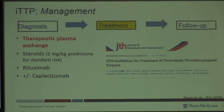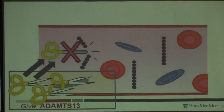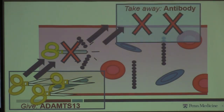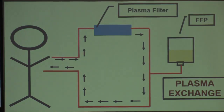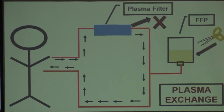Therapeutic Plasma Exchange isn't widely known outside of those affected by TTP. The goal is really to give patients back their scissors — the ability to cut that von Willebrand factor again — and to clear the antibody. For most cases it's an antibody-mediated process. What we do is take the patient's plasma, put it through a filter, and give them fresh frozen plasma back. This removes the antibody and gives them back their ADAMTS13. Unfortunately this involves placing a large catheter, which is a significant procedure.